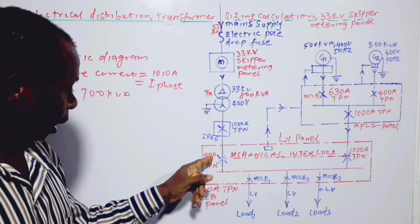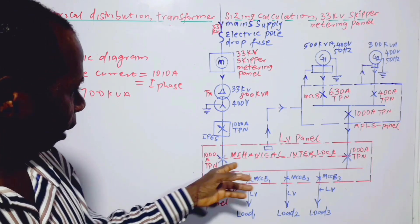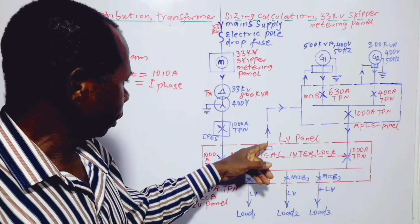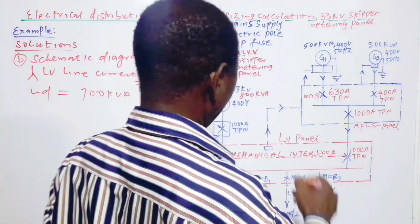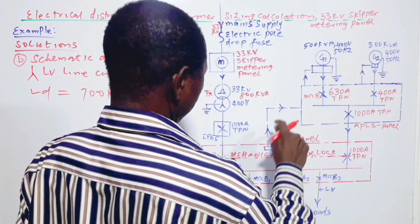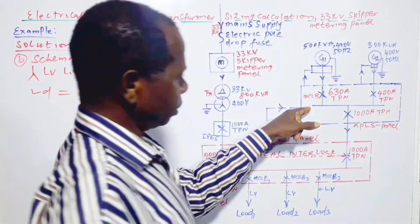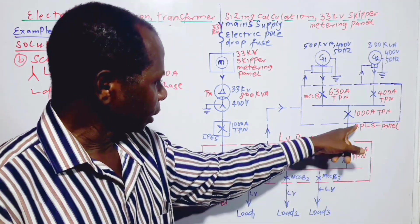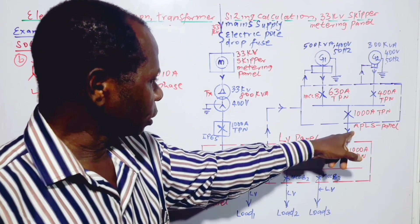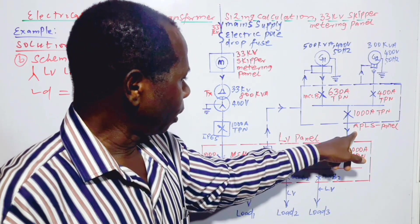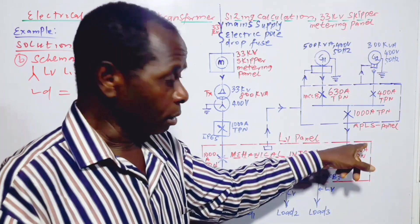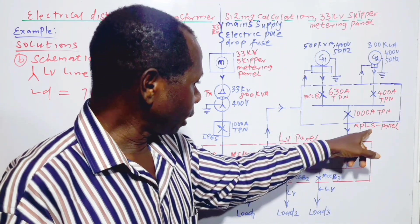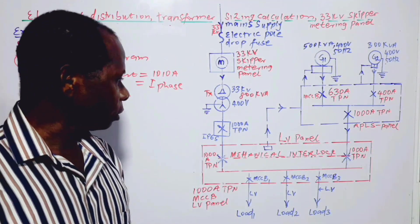And then on this side also, we have 1000 ampere circuit breaker. So when there is main failure, there will be a sensing signal from this panel to this panel here, this APLS panel. This A means, or this APLS means automatic main failure panel, and it's also serving as a phase sequence panel, and it's also serving as load shedding, and synchronizing panel as well. So that is what it's doing.